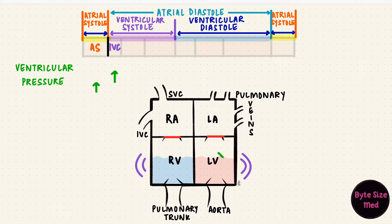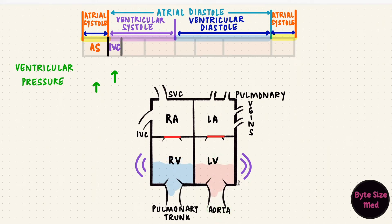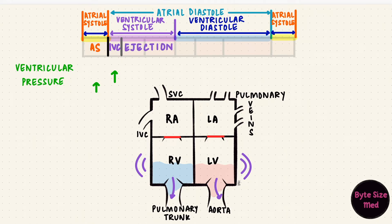We're focusing on the left side of the heart, so when the pressure in the left ventricle goes higher than the aortic pressure, the aortic valve opens. Blood gets ejected out during the ejection phase — first rapid ejection, and then slow ejection. During this ejection phase, the pressure in the ventricle would reach a peak, and then it starts to fall.